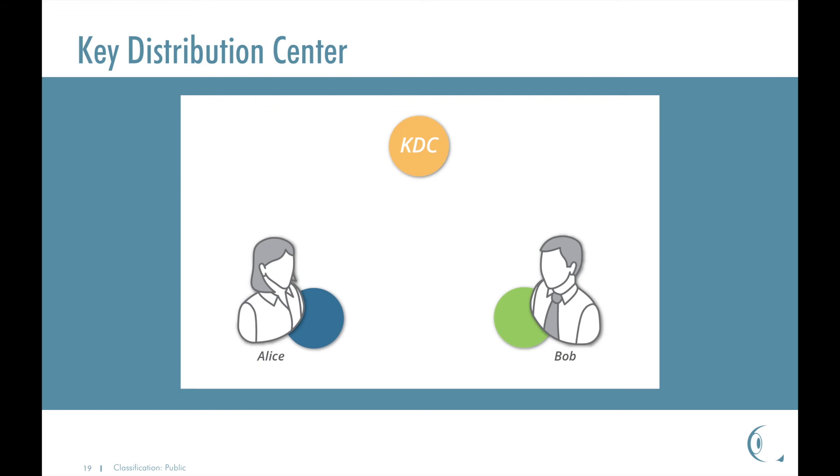Using the key K-Alice to encrypt her communication with the key distribution center, Alice sends a message to the key distribution center saying she wants to communicate with Bob. The key distribution center knowing the key K-Alice decrypts the message. The key distribution center then authenticates Alice and then generates a session key. Let's call it SK. This is the shared key that Alice and Bob can use to perform symmetric encryption. As the name implies, Alice and Bob will use this key for only this one session.